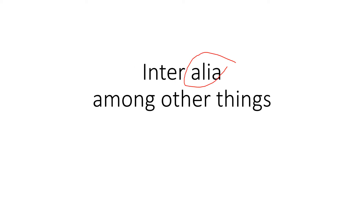The first word is 'inter alia.' 'Alia' means other things and 'inter' means among, so inter alia means among other things. Always try to learn these legal maxims from keywords or root words — that makes it much easier. If you haven't watched my first part video on legal words, I advise you to watch that first. Inter alia means among other things.